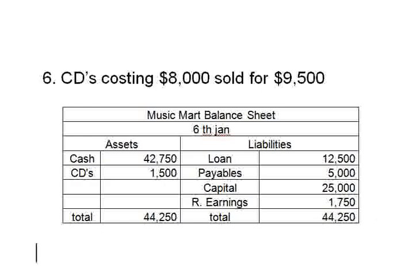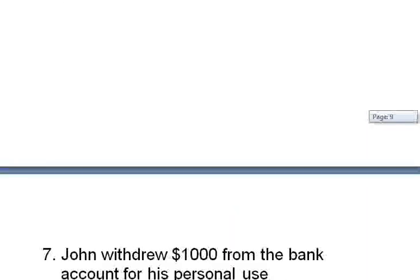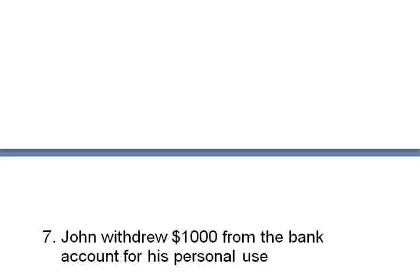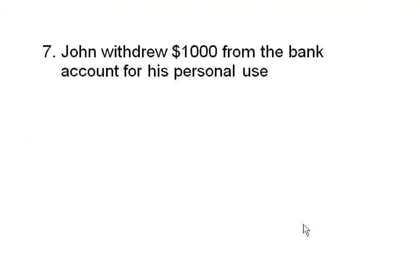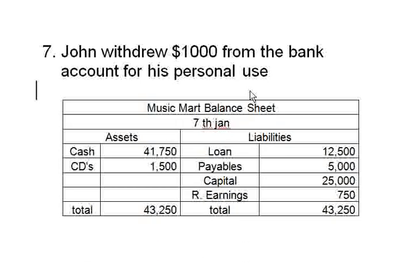Transaction seven: John withdrew 1,000 dollars from the bank account for personal use. This is a tricky one. Based on the entity concept, the company and the owner are separate — but John went into the company's bank account and took out 1,000 dollars for personal use. Surely the cash account will reduce by 1,000. Where else do we remove this?